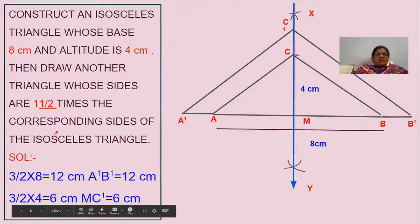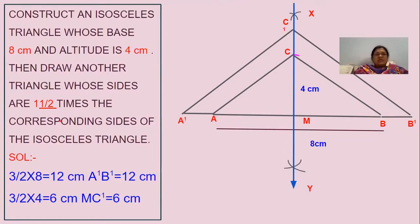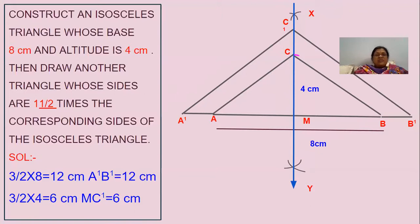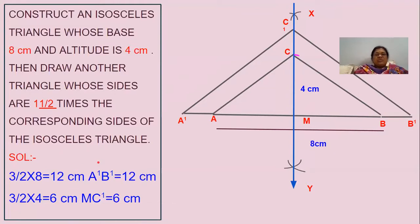The working part: it is given that the newly formed similar triangle is one and a half times — that is three by two — more than the original triangle. The base is given as eight centimeters. So eight into three by two equals twelve centimeters. That is the base of the similar triangle. The altitude will be four into three by two, which equals six centimeters. This is the working part you have to do before moving on to the construction.